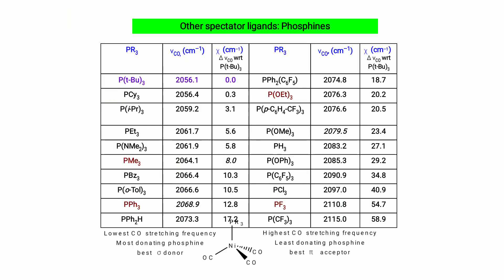For other spectator ligands such as phosphines: the lowest carbonyl stretching frequency corresponds to the most donating (best sigma donor) phosphine, and the highest carbonyl stretching frequency corresponds to the least donating (best pi acceptor) phosphine.